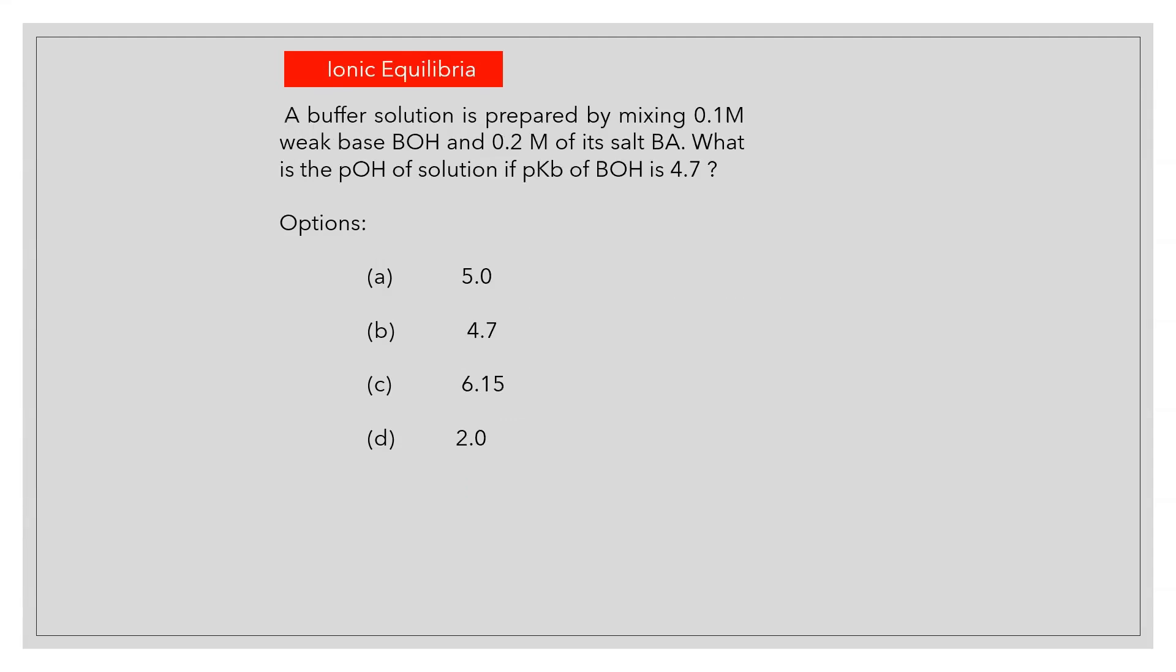A buffer solution is prepared by mixing 0.1 molar weak base BOH and 0.2 molar of its salt BA. What is the pOH of solution if pKb of BOH is 4.7? Answer A: 5.0.